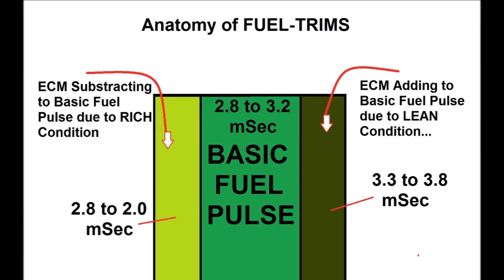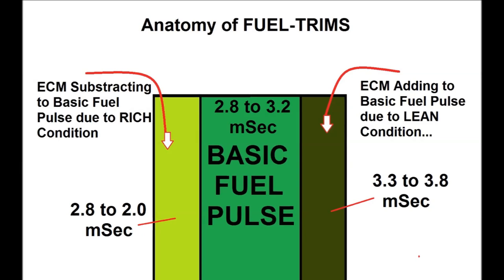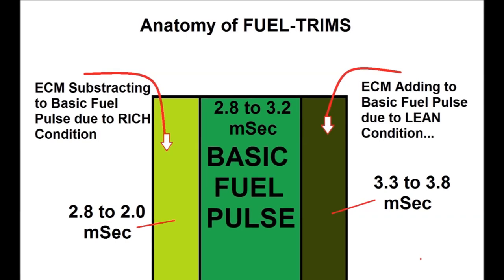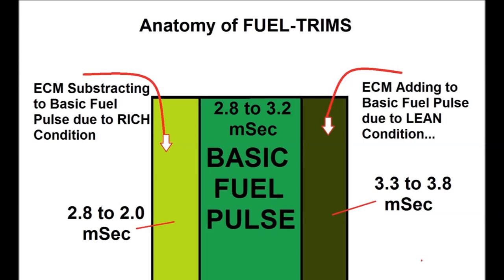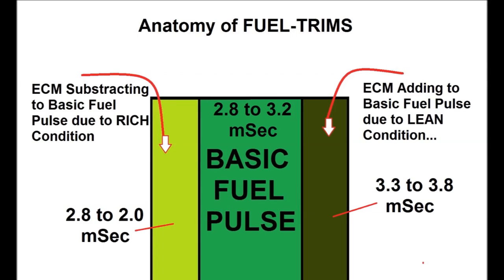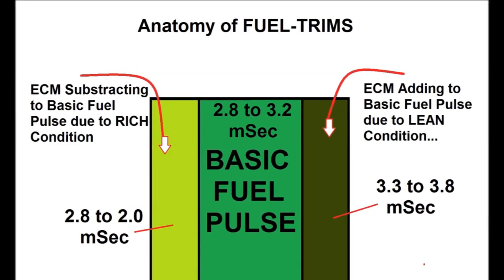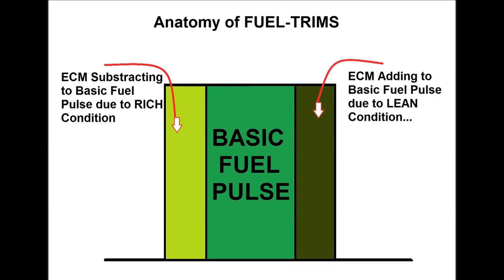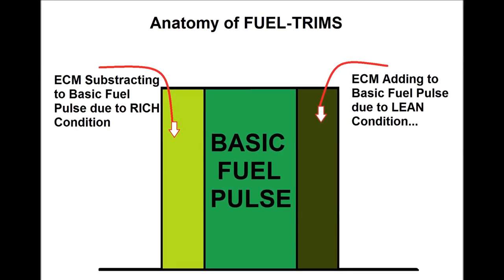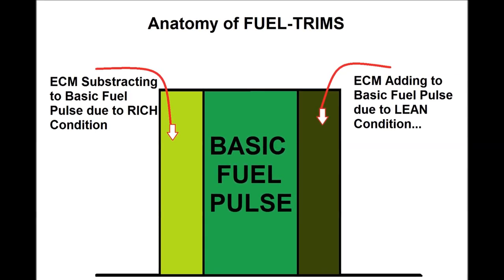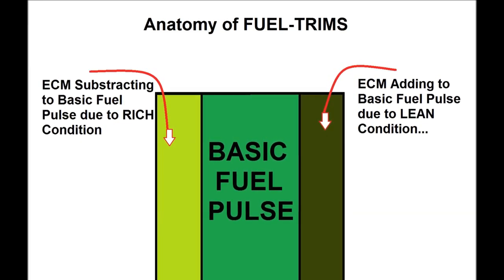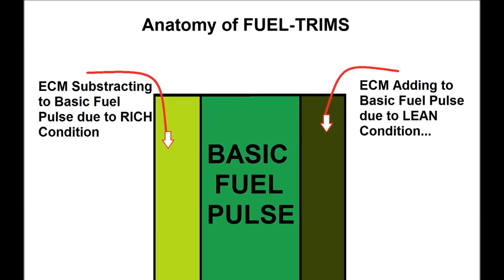The light green square shows the ECM subtracting from the basic fuel pulse because of a rich condition. A rich condition could be caused by fuel in the oil, a stuck-open or semi-stuck-open injector, or coolant flowing into the intake manifold due to a broken gasket. The antifreeze contains alcohol, so the ECM sees it as extra fuel, and subtracts from the basic fuel trim to correct for it.